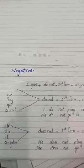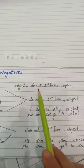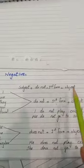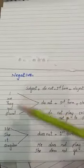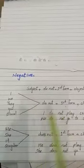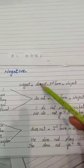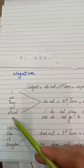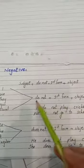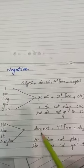Now negative: subject plus do not or does not, first form, object. Our helping verb is 'do' and 'does'. With I, we, they, you, and plural, we use 'do'. With he, she, it, and singular, we use 'does'.